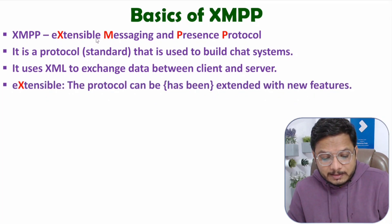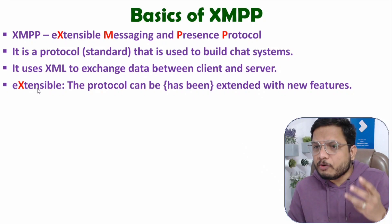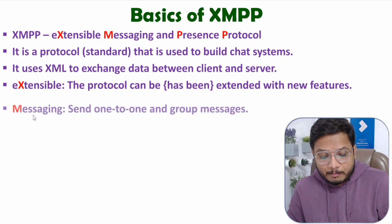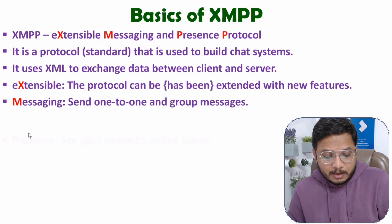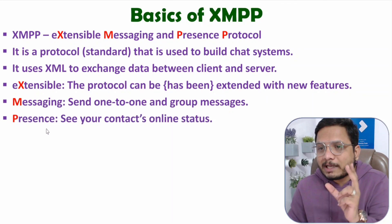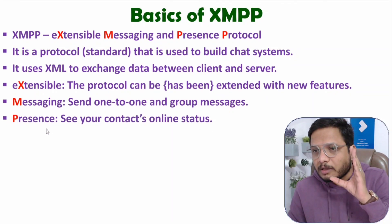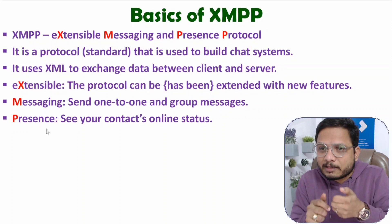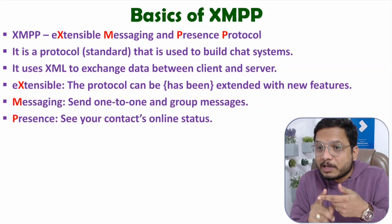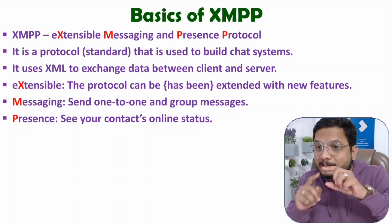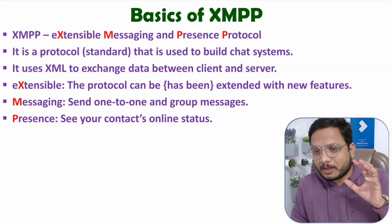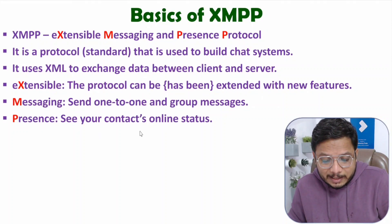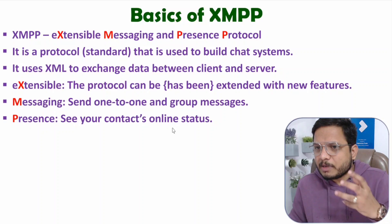To clarify: Extensible means many new features can be added. Messaging means one-to-one or group messages can be forwarded, like we do in WhatsApp. Presence means one can see online status based on contact list — for example, if you are in my WhatsApp contacts, I can see your online status, but only if you have allowed contacts to see it in your settings.